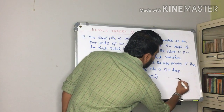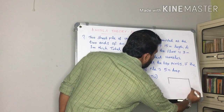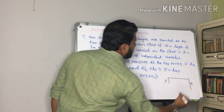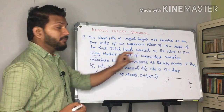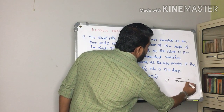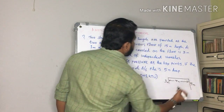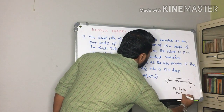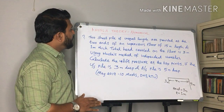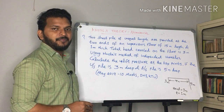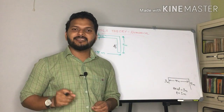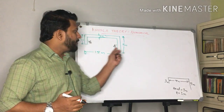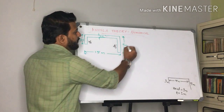We have one sheet pile upstream and one downstream of unequal length. Upstream pile depth is 3 meters and downstream pile depth is 5 meters. The impervious floor length is 15 meters. The total head is 3 meters and the floor thickness is 1 meter. We need to find the uplift pressure at the key points for both the upstream pile and downstream pile.